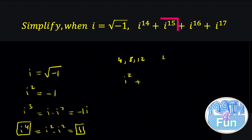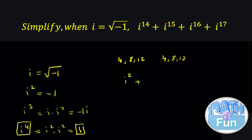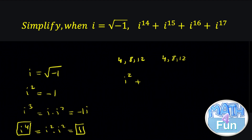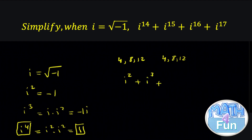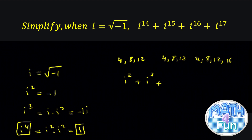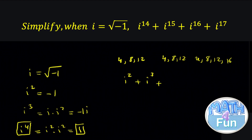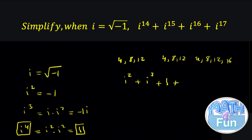Plus, similarly, i to the power 15: we count 4, 8, 12, and then we get 3 more, so i to the power 12 is ignored because it's i to the power 4 times i to the power 4 times i to the power 4, which equals 1. So we are left with i to the power 3. Plus, i to the power 16: that's 4, 8, 12, 16 — all four groups of i to the power 4, which equals 1. So we write 1 plus i to the power 17: i to the power 16 equals 1, and you're left with i.